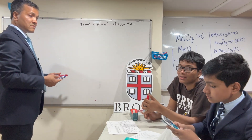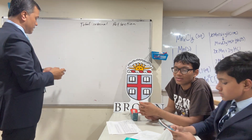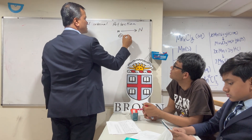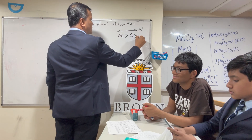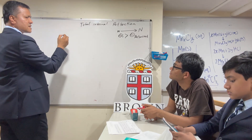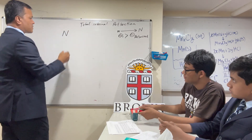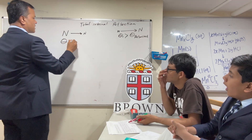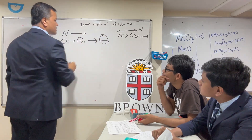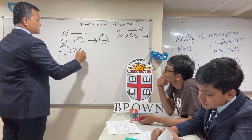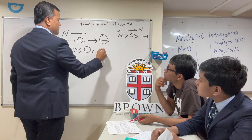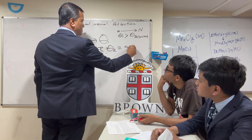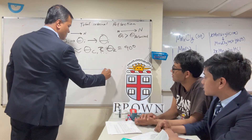Last time I told you: when light goes from small n to big n, theta incident is greater than theta refracted. Today I'm going to tell you the other case — when light goes from big n to small n. As the incident angle gets bigger and bigger, when the incident angle equals what we call the critical angle, the refracted angle becomes 90 degrees. That's the boundary between small n and big n.